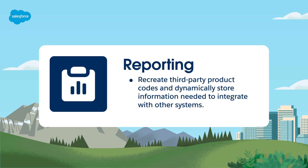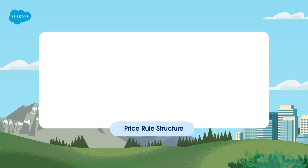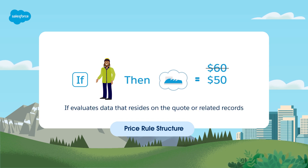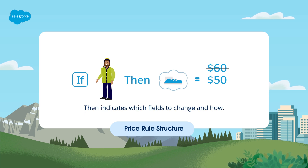Let's say you have a product SKU naming convention in your ERP that's different from the naming convention in Salesforce. A price rule can automatically update one to the other. Price rules follow an IF, THEN format. For example, IF new customer and signature sneakers, THEN take $10 off the original price. The IF portion evaluates data that resides on the quote or related records. When you create the IF statement, make it specific so that all price changes are defined and expected. The THEN portion of the rule indicates which fields to change and how, involving replacing the field value with something calculated.